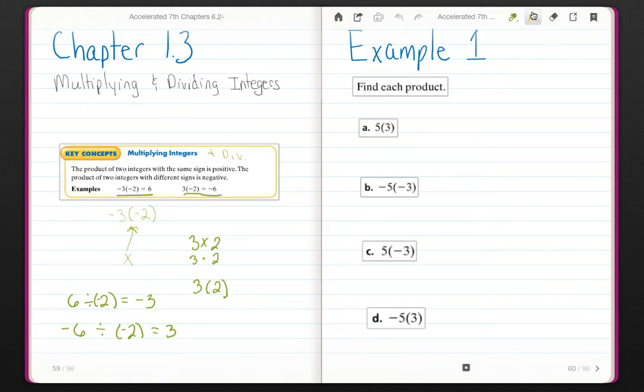So let's go ahead and find each product in example number 1. So 5 times 3. Of course, you would write the original problem. If you choose on your work, if you still want to show it as 5 times 3 for right now, that's fine. If you want to use the parentheses, that's fine with me also. But remember, your answer goes underneath. So 5 times 3 is 15. They're both positive, so of course your answer is positive.